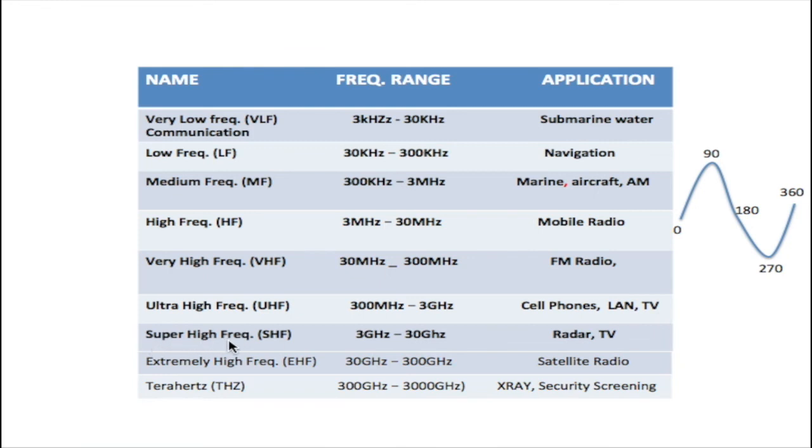The super-high frequency, abbreviated as SHF, with a frequency range between 3 gigahertz and 30 gigahertz, is used for radar and TV. Now, terahertz, abbreviated as THZ, has a frequency range between 300 gigahertz and 3,000 gigahertz. This frequency band is used for X-ray, security screening, and it will also be used for future wireless communication as well.